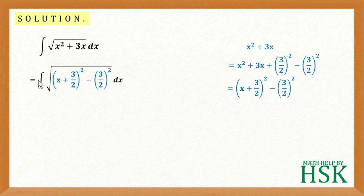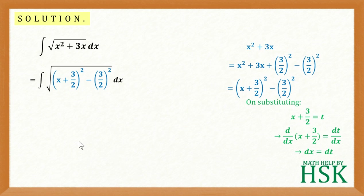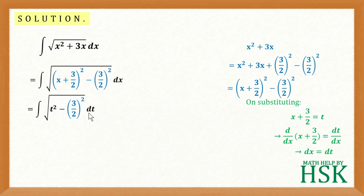Now I obtain the integral in this simplified form. I place x plus 3/2 equal to t. On substituting x plus 3/2 equal to t and differentiating both sides with respect to x, I get dx equal to dt. So replacing x plus 3/2 by t and dx by dt, I get the integral further simplified as the integration of square root of t squared minus (3/2)² dt.